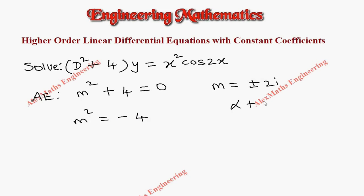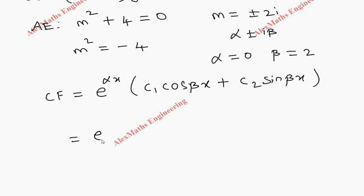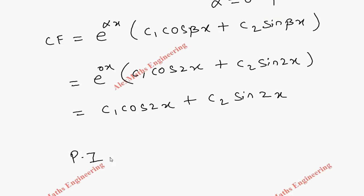This is of the form α ± iβ, so α = 0 and β = 2. The complementary function is e^(αx)·(c1·cos βx + c2·sin βx). Substituting α = 0, e^(0x) = 1, so the CF is simply c1·cos2x + c2·sin2x.